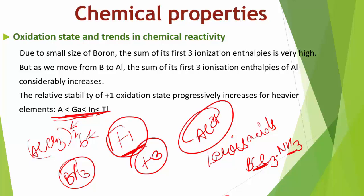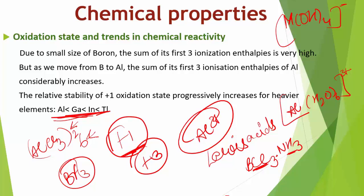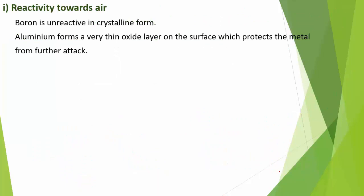In the trivalent state, most compounds being covalent are easily hydrolyzed in water. Trichlorides hydrolyze to form tetrahedral M(OH)₄⁻ species with SP³ hybridization. Aluminium chloride in acidified aqueous solution forms the octahedral ion Al(H₂O)₆³⁺, where 3D orbitals of aluminium are involved and the hybridization state is SP³D².